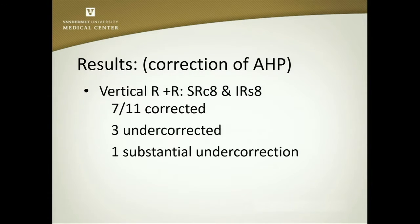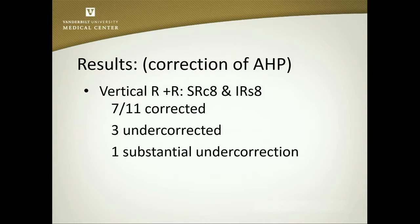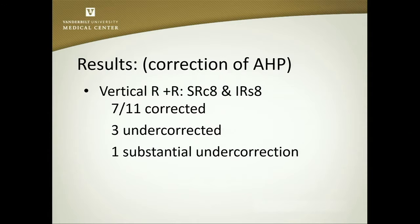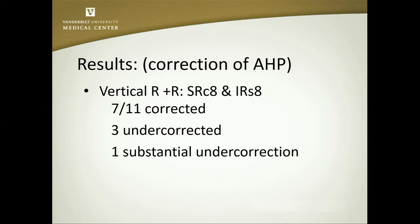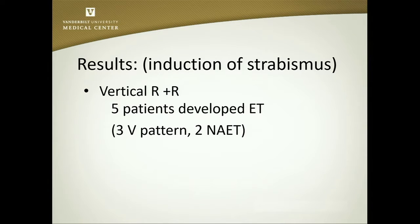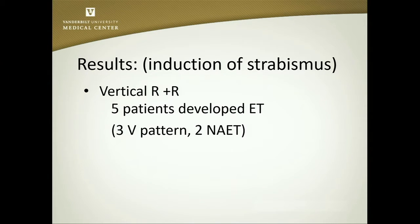I want to talk about the results from these 22 cases. There were 11 that had superior rectus muscle recessions bilaterally with simultaneous inferior rectus resections, both of approximately 8 millimeters. Of those, 7 patients had their head positions corrected, but 4 had substantial under-corrections. More bothersome was the induction of horizontal strabismus — a large V-pattern esotropia in 5 of those patients: 3 who had a V-pattern and 2 who developed a non-accommodative esotropia requiring additional eye muscle surgery.